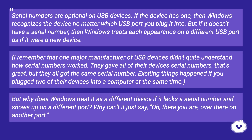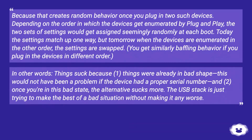But why does Windows treat it as a different device if it lacks a serial number and shows up on a different port? Why can't it just say, 'Oh, there you are, over there on another port?' Because that creates random behavior once you plug in two such devices. Depending on the order in which the devices get enumerated by plug and play, the two sets of settings would get assigned seemingly randomly at each boot.